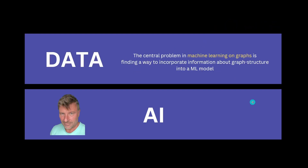So it's time I move here to the data, and I'm going to tackle with you in this video and in the next two upcoming videos the central problem in machine learning on graphs. ML on graphs is to find the right way to incorporate the information about the graph structure — the adjacency matrix more or less — into your machine learning model. So you're in luck, because we will now focus finally where you have all the questions.